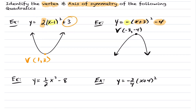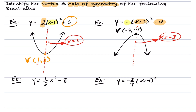These questions also ask for the axis of symmetry — a vertical line that cuts the quadratic into two equal pieces. Because it's a vertical line, it's expressed as x equals something. You always grab the x-coordinate of your vertex. For example one, the axis of symmetry is x equals 1. Likewise for example two, the axis of symmetry is x equals negative 3.